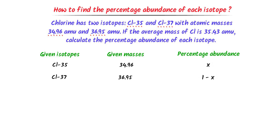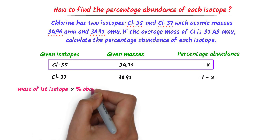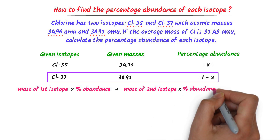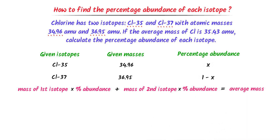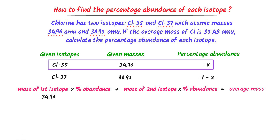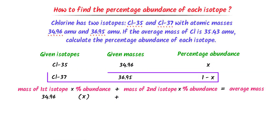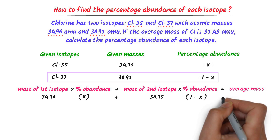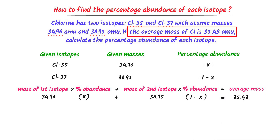I use this formula: mass of first isotope times percentage abundance, plus mass of second isotope times percentage abundance, equals average mass. We know that the mass of the first isotope is 34.96 amu times X, plus the mass of the second isotope 36.95 amu times (1 minus X), equals the average mass of 35.43 amu.